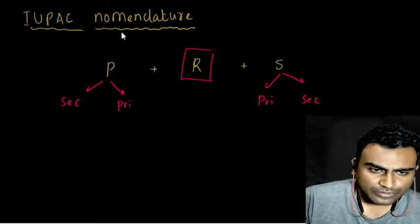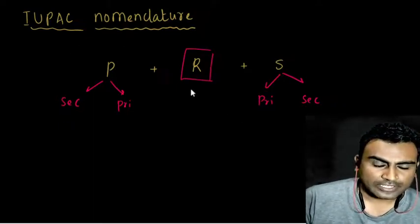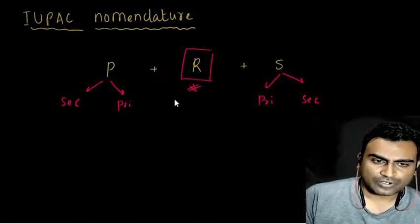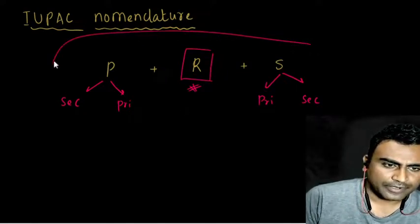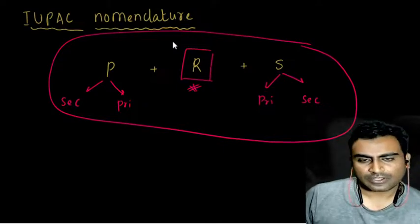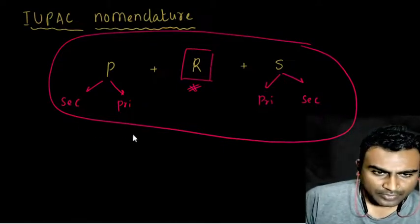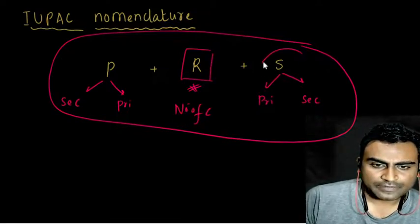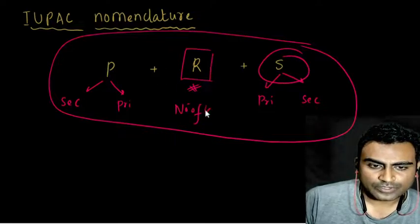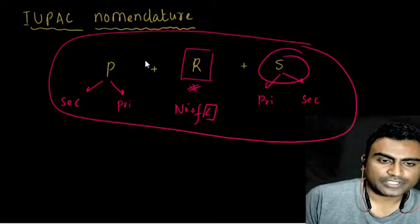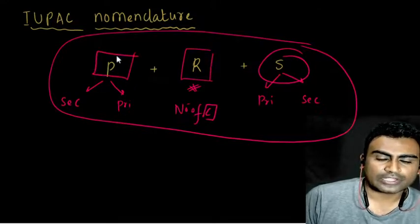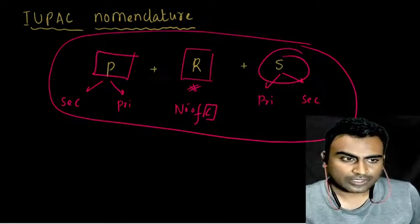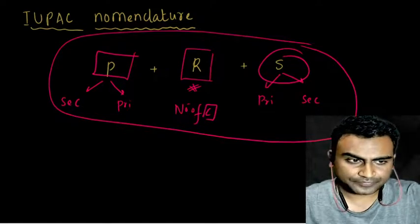The root word indicates the number of carbon atoms in the main chain. The suffix indicates what comes after the root word. The prefix indicates what comes before the root word.